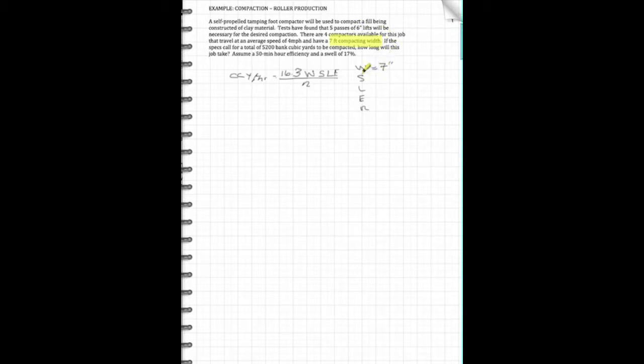Alright, so next thing is S, which is the average roller speed in miles per hour. So average roller speed, if you come back in here, average speed, 4 miles per hour. So that gives us this one, 4.